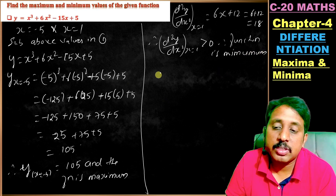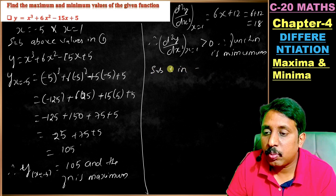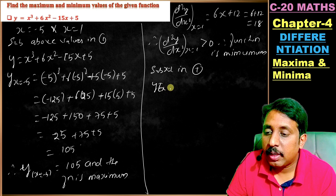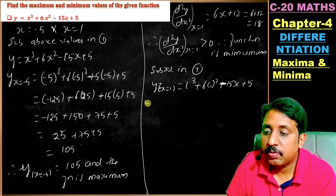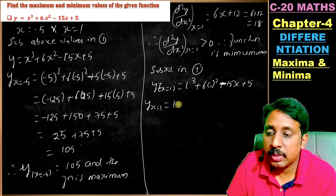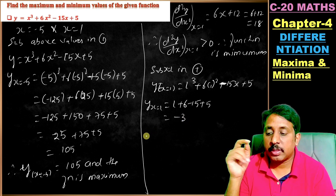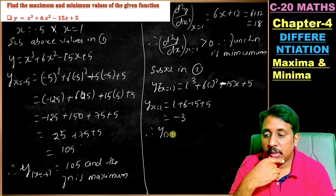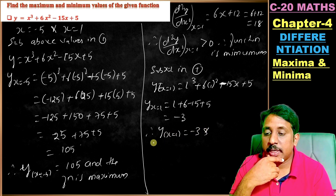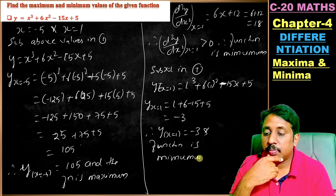Since the function is minimum, substitute x = 1 into equation 1: y = 1³ + 6(1)² - 15(1) + 5 = 1 + 6 - 15 + 5 = -3. Therefore y at x = 1 is equal to -3, and the function is minimum at this point.